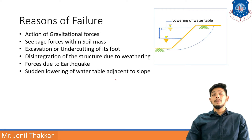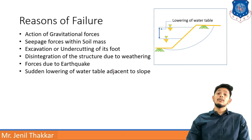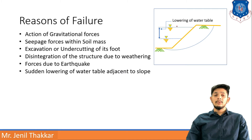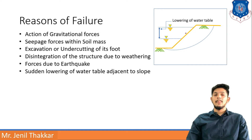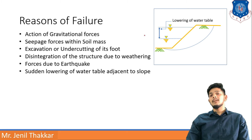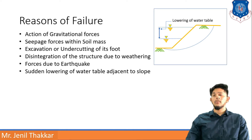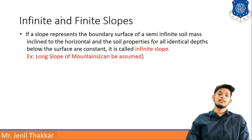Another failure cause is sudden lowering of the water table adjacent to a slope. As shown by the inverted triangle, if the water table was at a higher level two days ago and then dropped, the slope will become unstable and cause failure. These are the several reasons for slope failure.